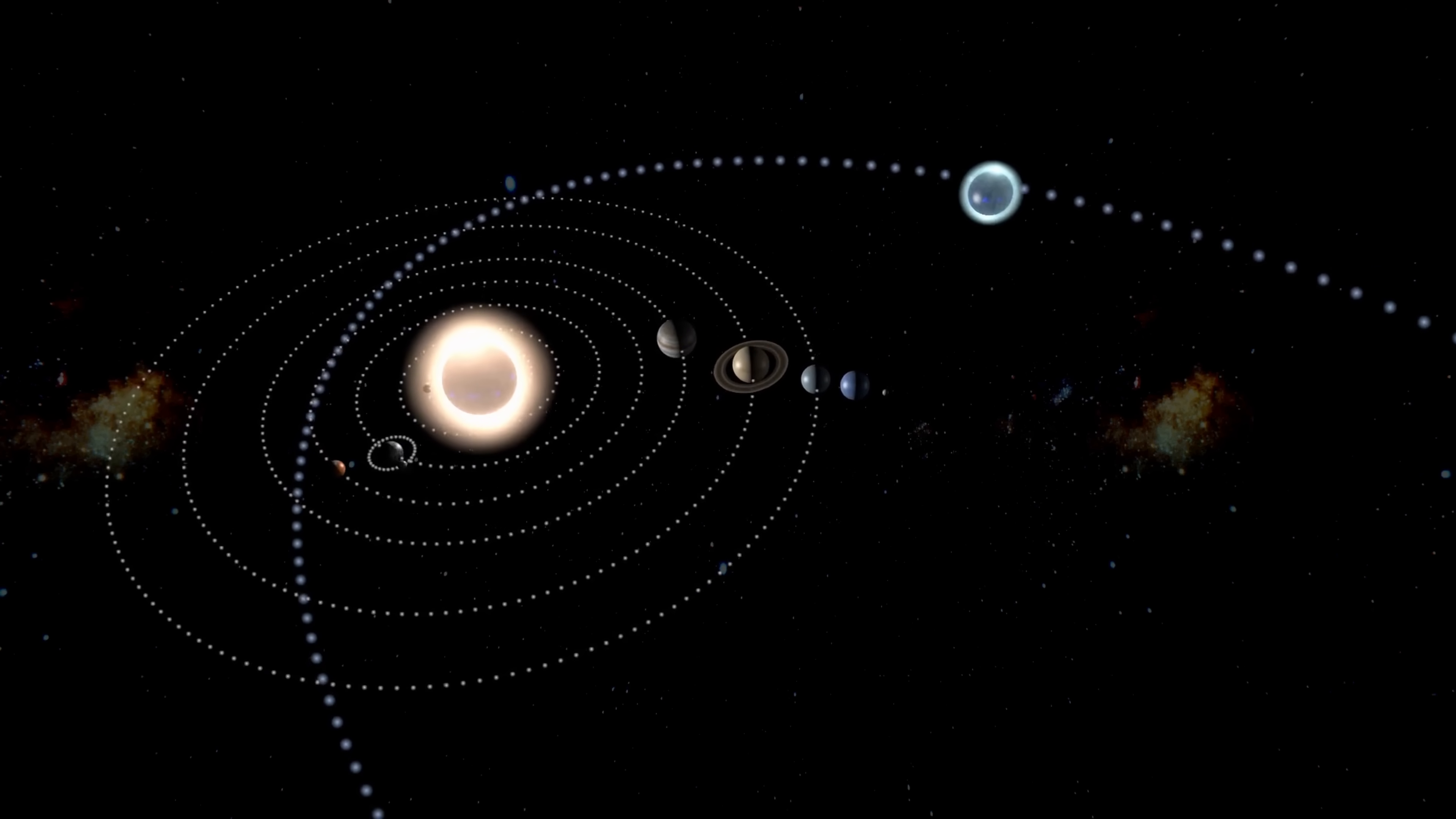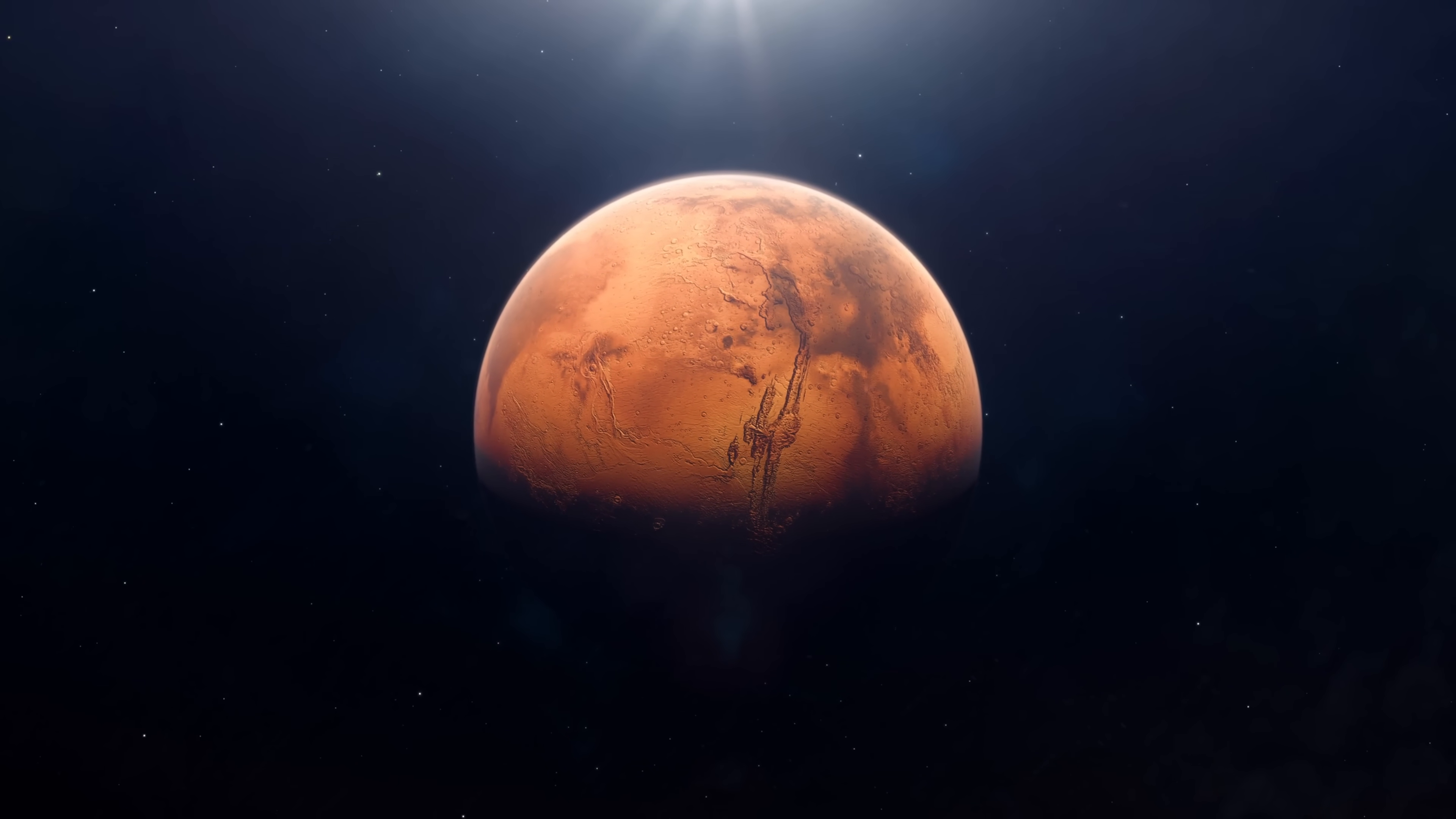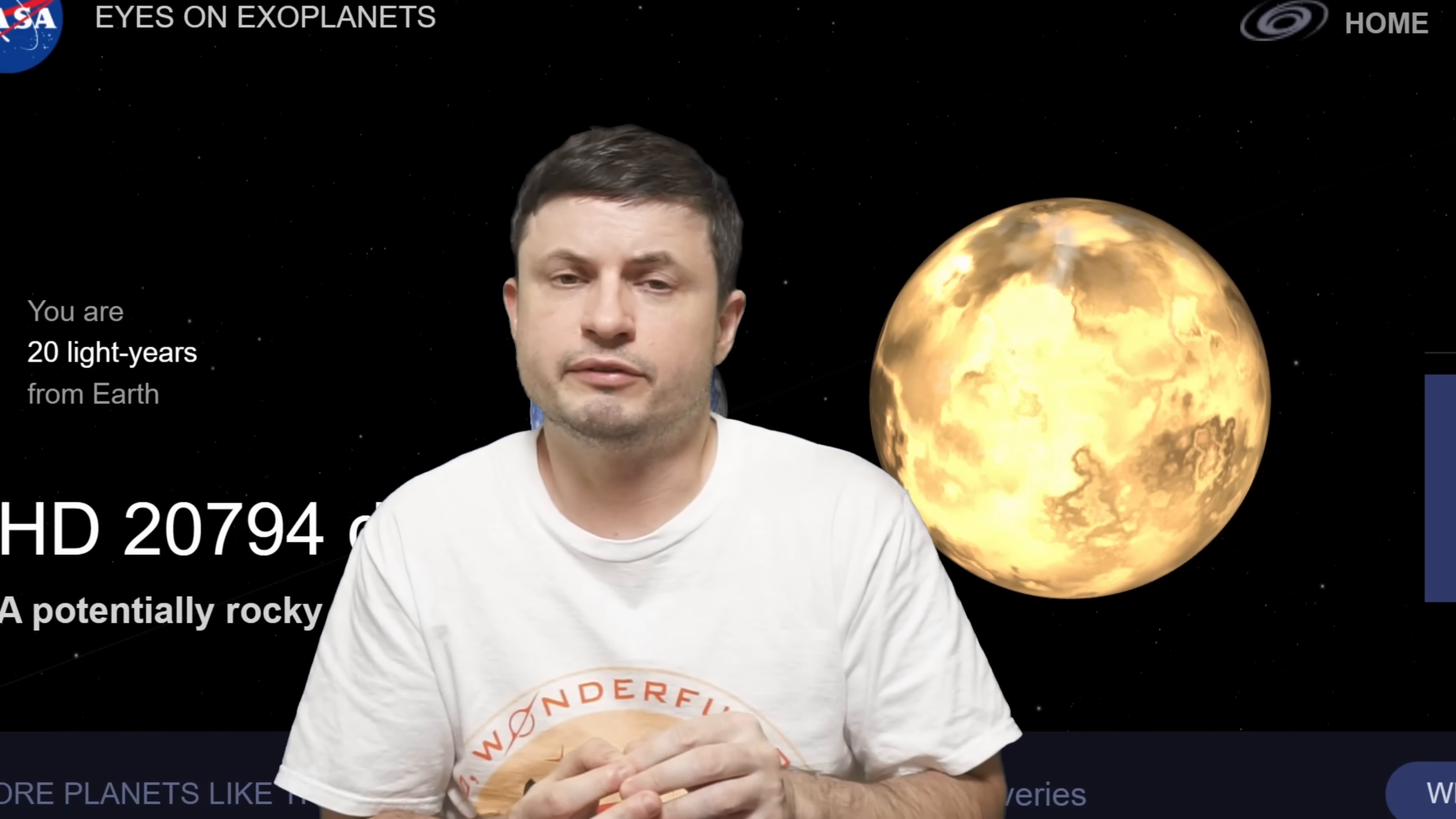It seems to extend from about 0.7 AU at its closest, which is around the same distance as Venus from the Sun, but then go all the way to 1.5 AU, which is basically where Mars is located away from the Sun.